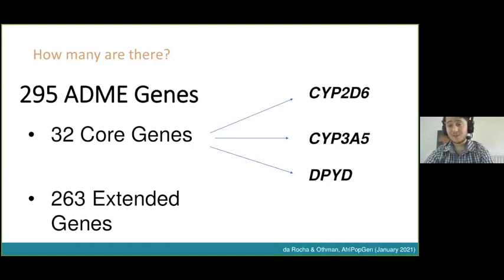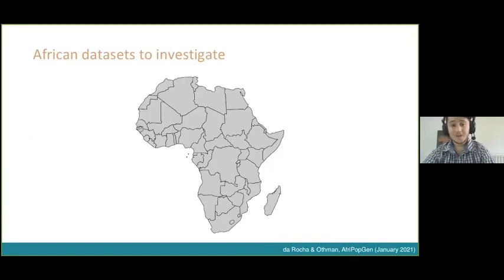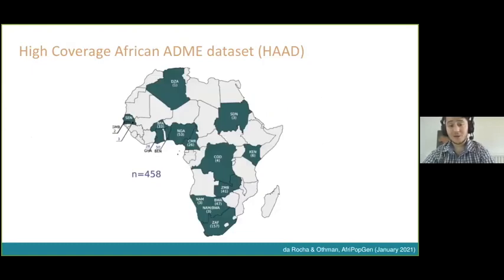Cytochrome 2D6 is very important for cancer drug metabolism. 3A5 and 3A4 are very important for broad drug metabolism, and DPYD for specific drugs like fluorouracil. We needed African datasets to investigate, and we are fortunate to work with excellent collaborators who helped put together the high-coverage African ADME dataset, collecting a large amount of genomic data from across the African continent, forming two strong bases in Southern Africa and Western Africa.